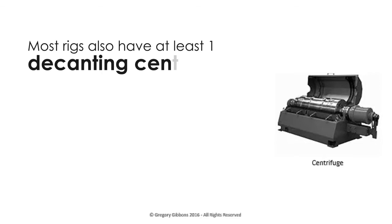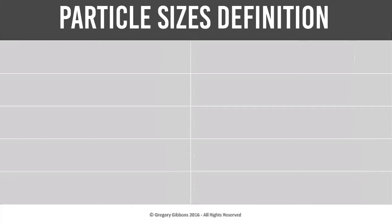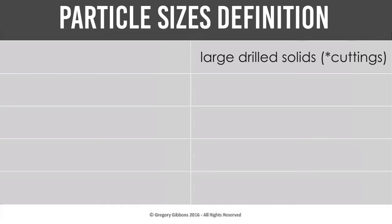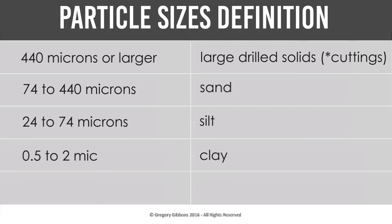Most rigs also have at least one decanting centrifuge installed for the attempted removal of near colloidal sized particles. Centrifuges come in different bowl sizes and g-force levels. Here we see that large drill solids are classified as anything larger than 440 microns, sand from 74 to 440 microns, silt from 2 to 74 microns, clay from 0.5 to 2 microns, and colloidals anything less than 0.5 microns.